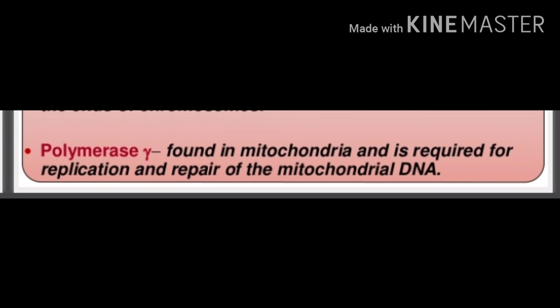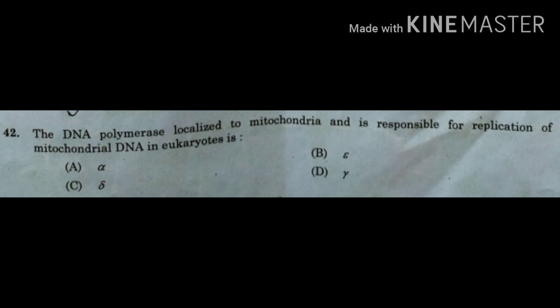DNA polymerase gamma is found in mitochondria and is required for replication and repair of the mitochondrial DNA. All other DNA polymerases — namely DNA polymerase alpha, epsilon, and delta — are mainly concerned within the nucleus, their activity is concentrated within the nucleus. But DNA polymerase gamma is mainly found in mitochondria and responsible for the replication and repair of mitochondrial DNA. So the correct answer for this question is Option D, gamma DNA polymerase.